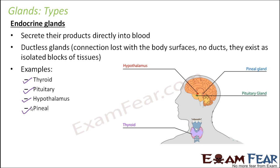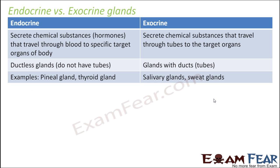Some examples of endocrine glands: thyroid is present near the neck; hypothalamus, pituitary, and pineal are all present in some part of the brain. To summarize: endo means inside, exo means outside. Endocrine glands secrete chemical substances that travel through blood to specific target organs, whereas exocrine glands secrete chemical substances that travel through tubes to target organs. Endocrine glands are ductless; exocrine glands have ducts. Examples of endocrine glands: pineal, thyroid. Examples of exocrine glands: salivary, sweat.